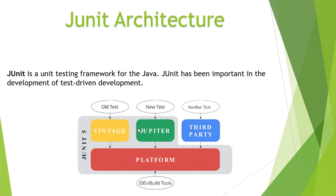The second interesting thing is the Jupiter API. JUnit 5 provides support for this Jupiter API, which provides a new way to automate test cases in Java. Why is it named Jupiter? As we all know, in our solar system Jupiter is the fifth planet, and JUnit 5 is the fifth version of JUnit — that's why they called it the Jupiter API. This Jupiter API supports new test cases and provides a very automated way to get tests done. There are also third-party APIs available if your test case requirements are different, which can communicate with the platform to get your work done.